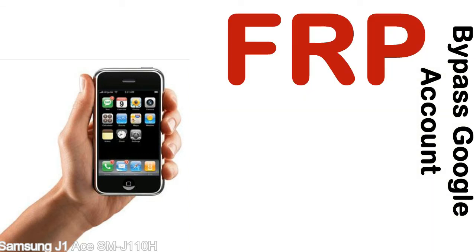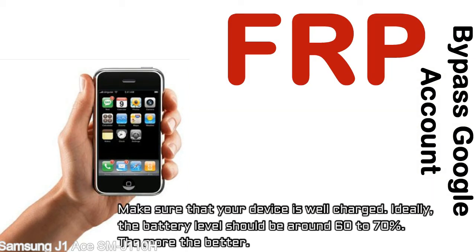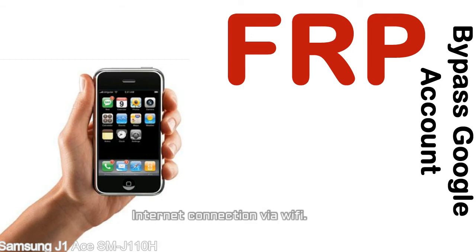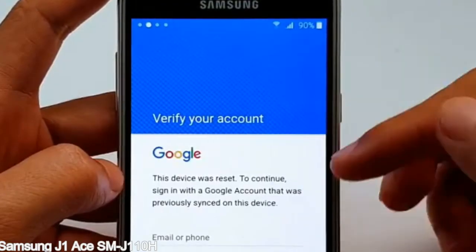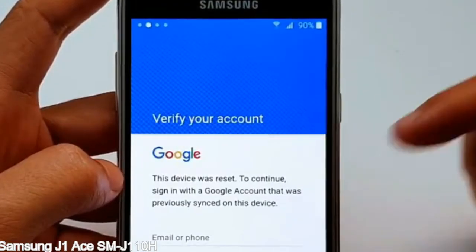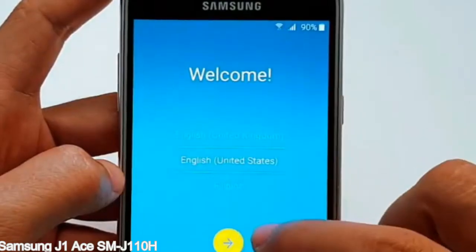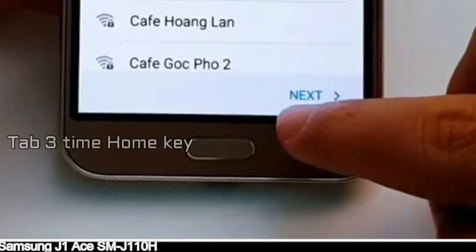Before starting: first, make sure that your device is well charged. Ideally, the battery level should be around 60 to 70% — the more the better. Second, you will need an internet connection via WiFi. Here is a step-by-step guide on how to bypass the Google account on your Samsung Galaxy device.